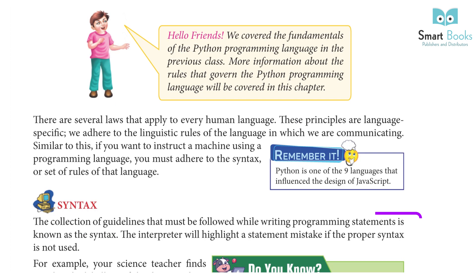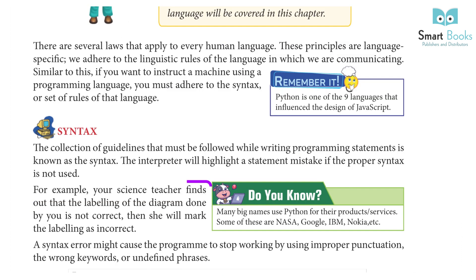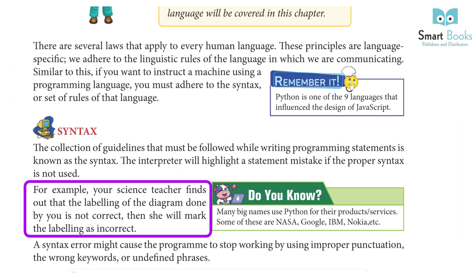Syntax: The collection of guidelines that must be followed while writing programming statements is known as the syntax. The interpreter will highlight a statement mistake if the proper syntax is not used. For example, your science teacher finds out that the labeling of the diagram done by you is not correct, and she will mark the labeling as incorrect.